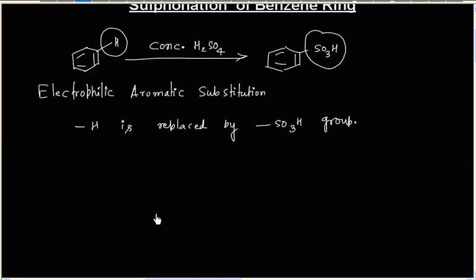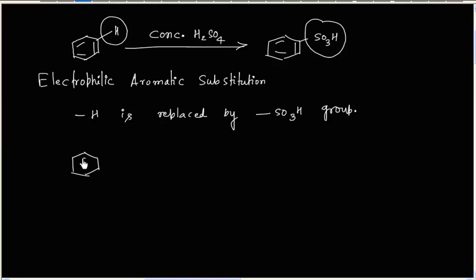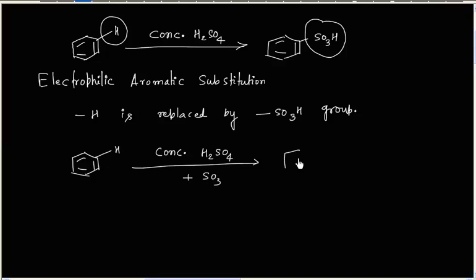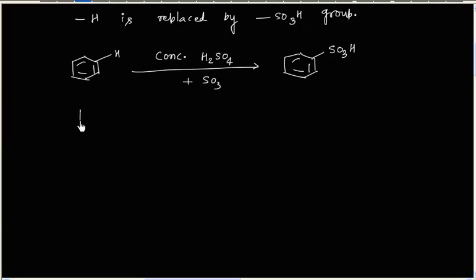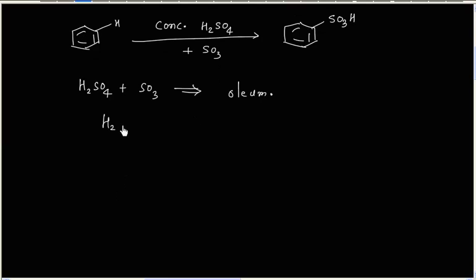From experiment it is found that if, in place of concentrated sulfuric acid, we take a mixture of concentrated sulfuric acid plus SO₃, the rate of sulfonation increases. This mixture of H₂SO₄ plus SO₃ is called oleum, and sometimes this is also written as H₂SO₇.